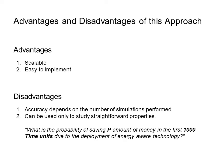Looking at the advantages and disadvantages of this approach: the advantages are that it is scalable — we can increase the number of rooms and persons and still run the program efficiently — and it is easy to implement. The disadvantages are that accuracy depends on the number of simulations performed, meaning higher accuracy requires a large number of simulations. Also, it can only be used to answer straightforward properties; for example, it is not easy to answer queries like what is the probability of saving a certain amount of money in a given time when using smart technology.